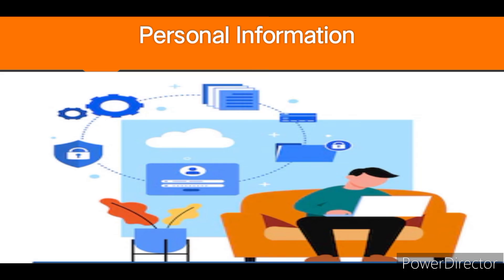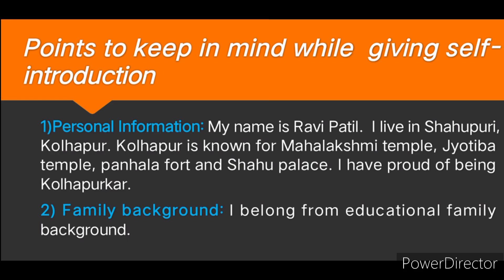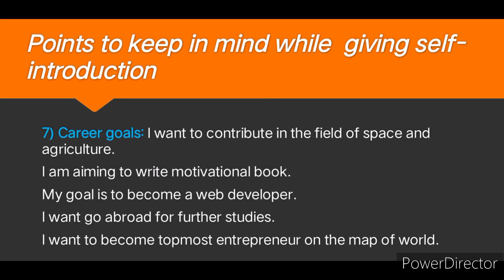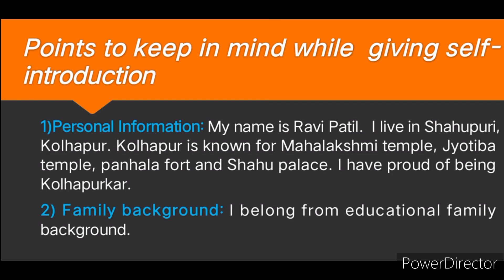Point number one will be personal information. Here we can write our personal information like: My name is Ravi Patil. I live in Shahpuri, Kolhapur. Kolhapur is known for Mahalakshmi Temple, Jyotiba Temple, Panhala Fort, and Shahu Palace. In short, we have highlighted our name and the information about our own city.